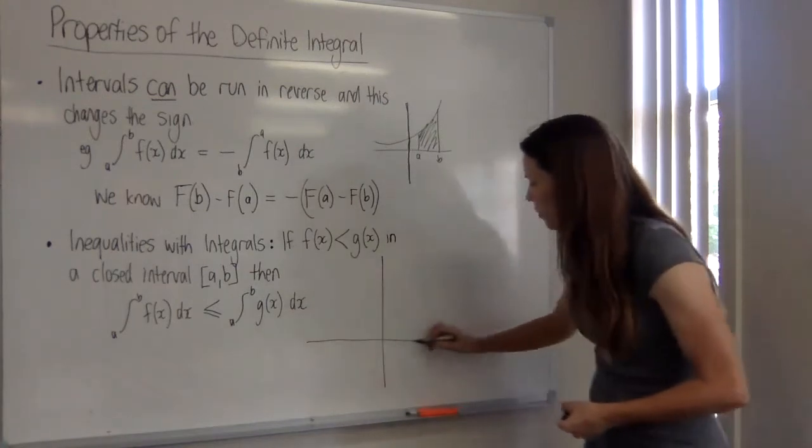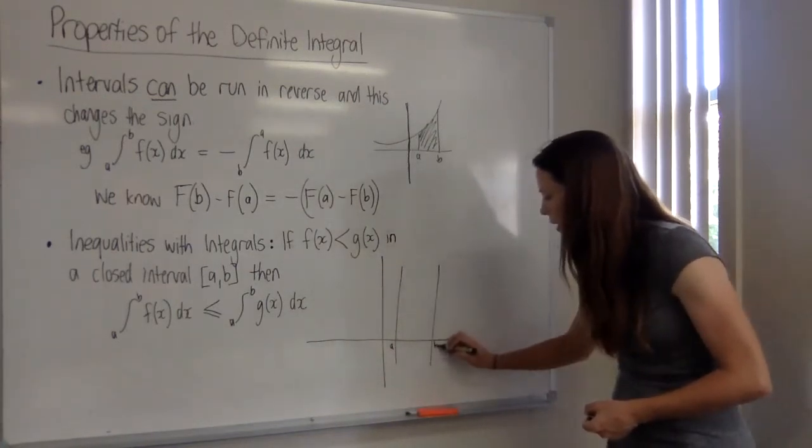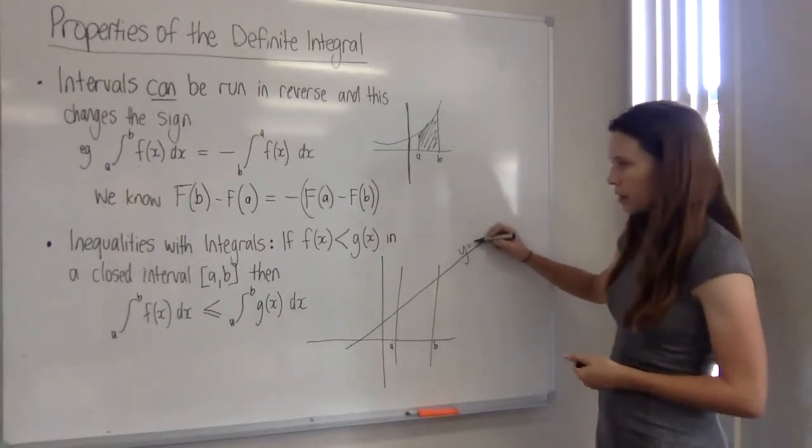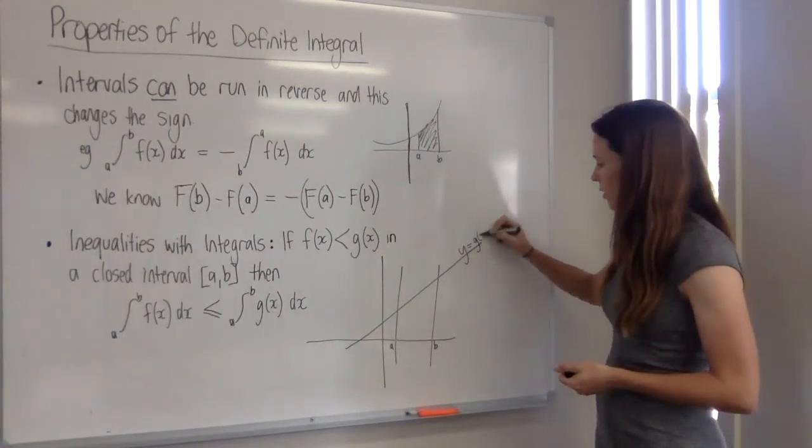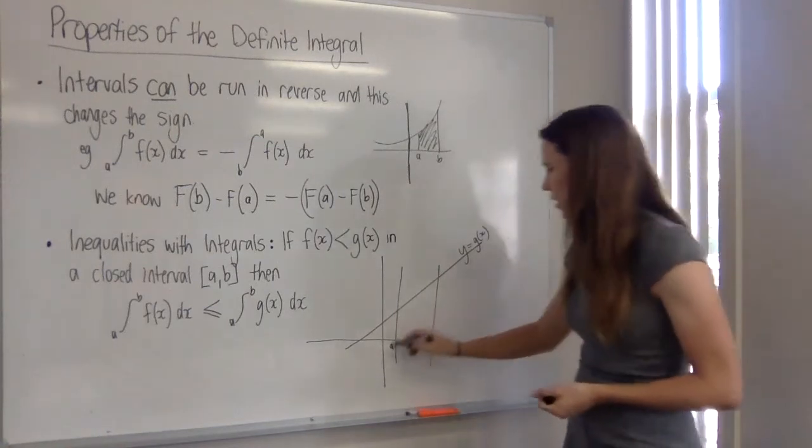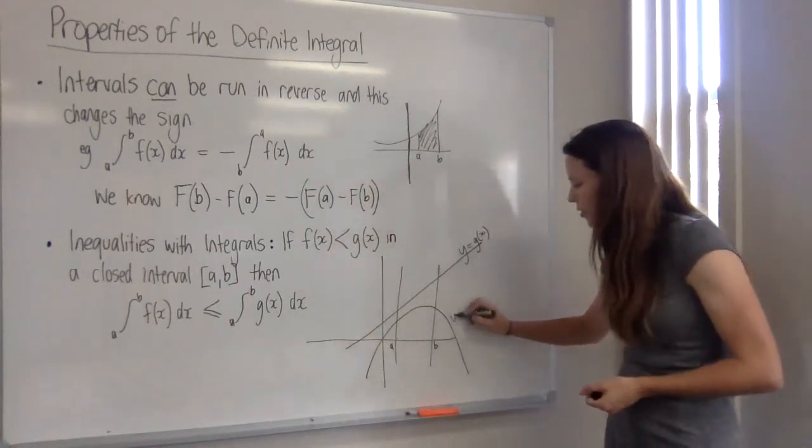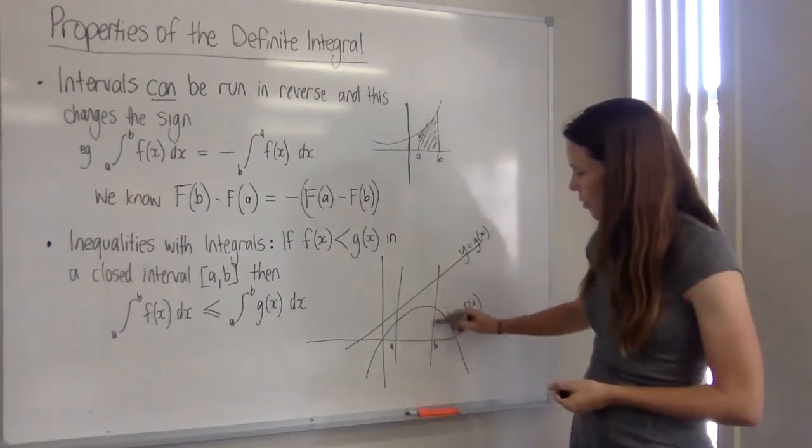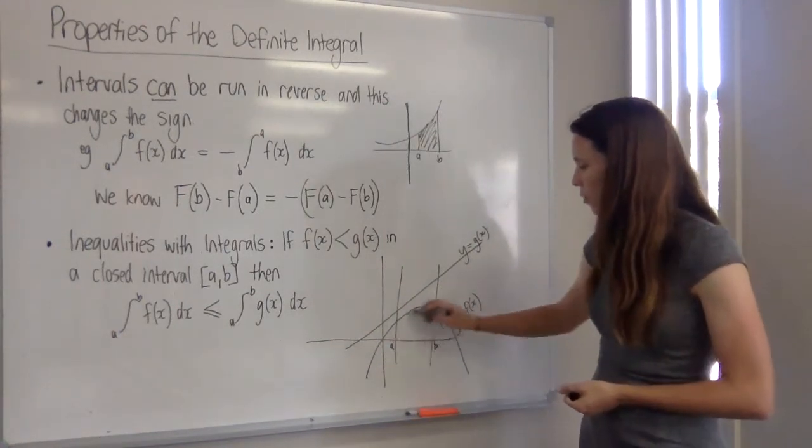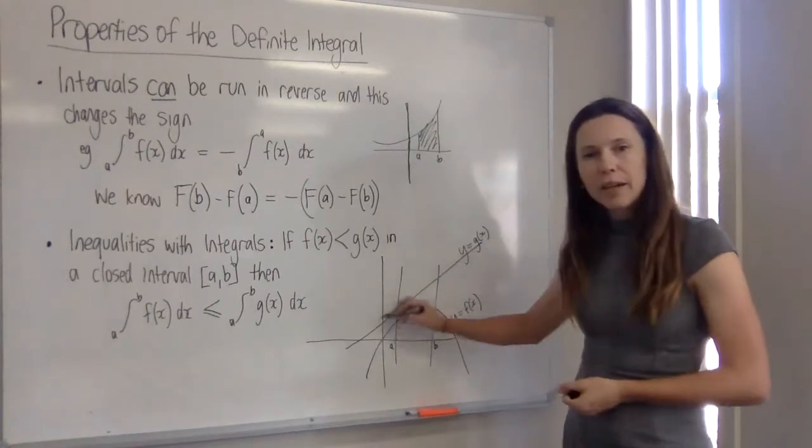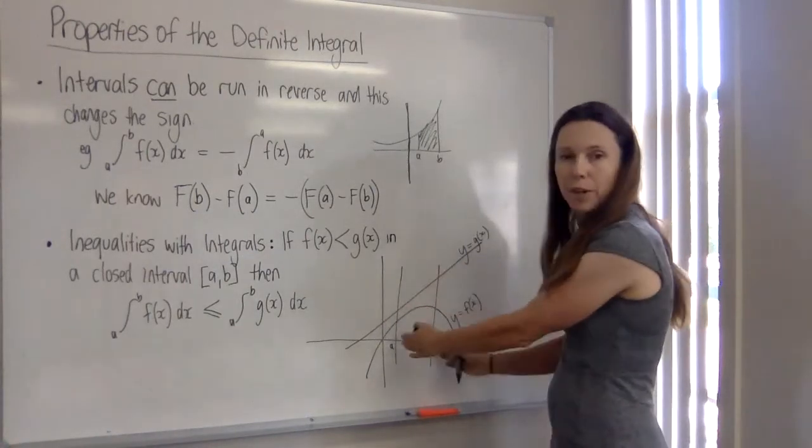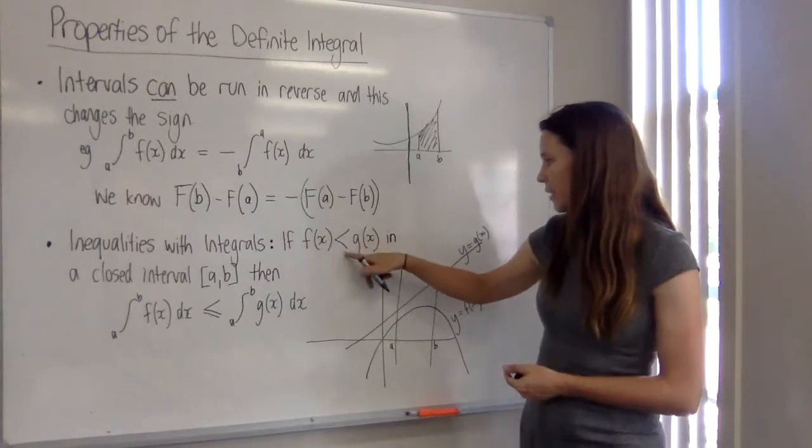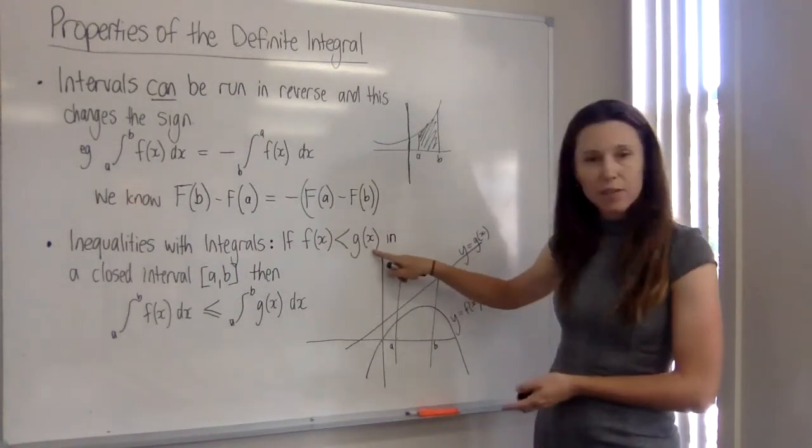What would this look like? Well, perhaps our bounds here are a and b, and we have some line here. Let's call this y equals G of x. And we also have perhaps a parabola sitting down here. This could be y equals F of x. I can see that within this space here, the parabola is sitting below the line throughout that whole region. So I can see there that F of x is indeed lower or less than G of x in value.